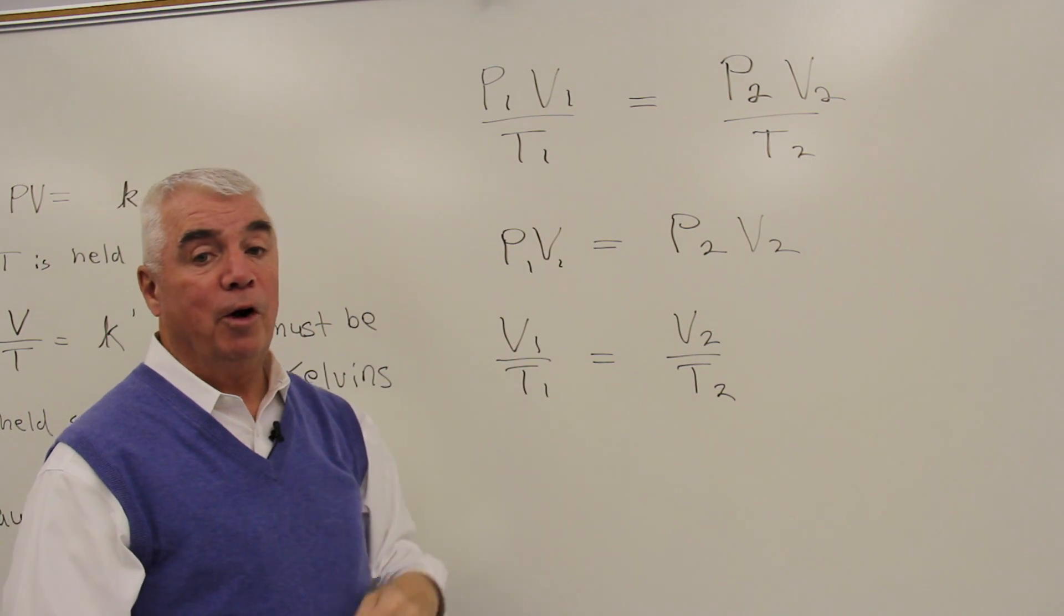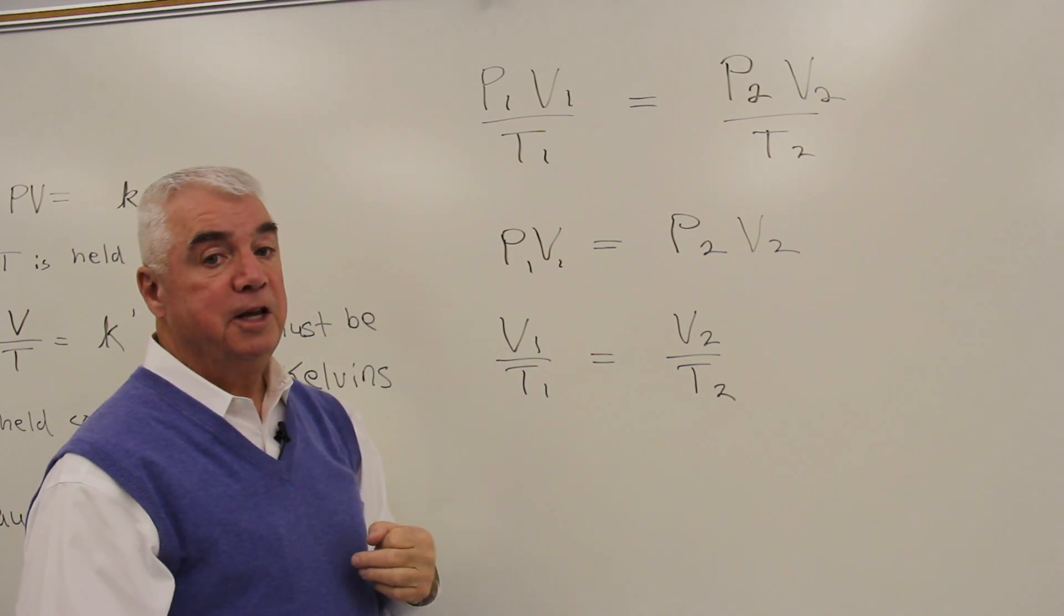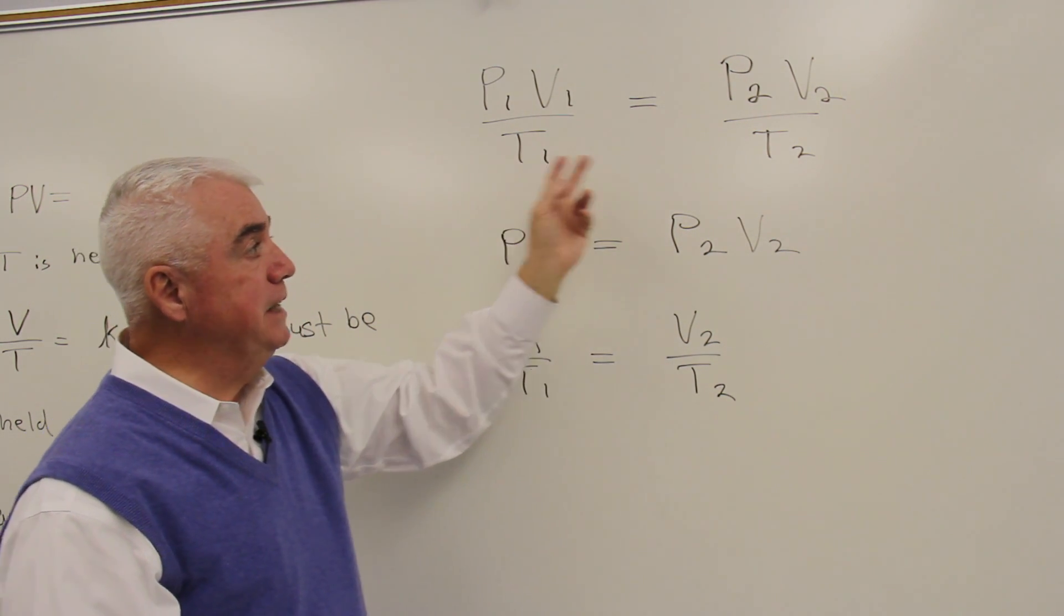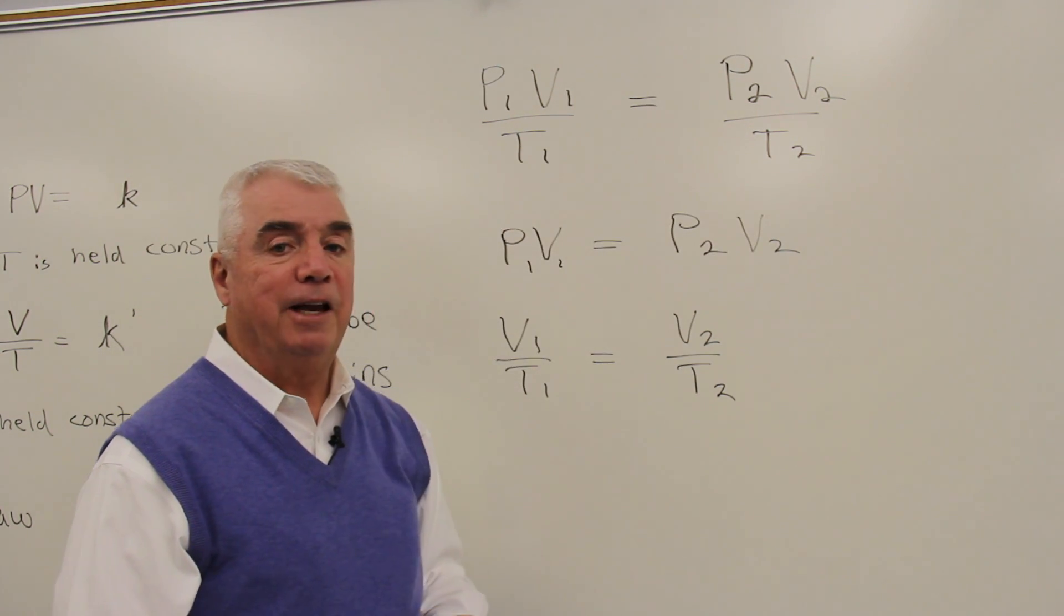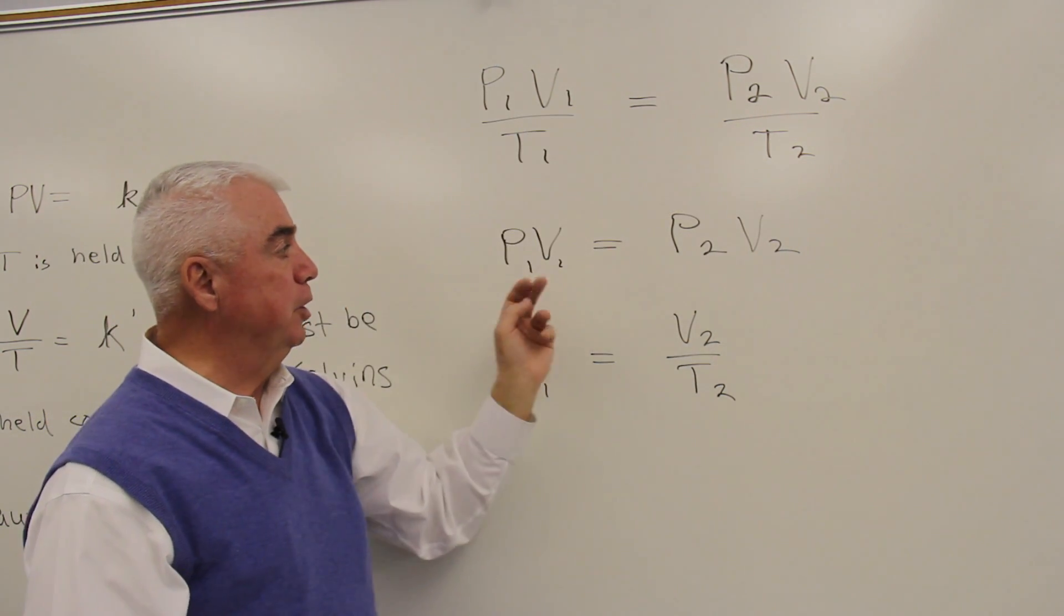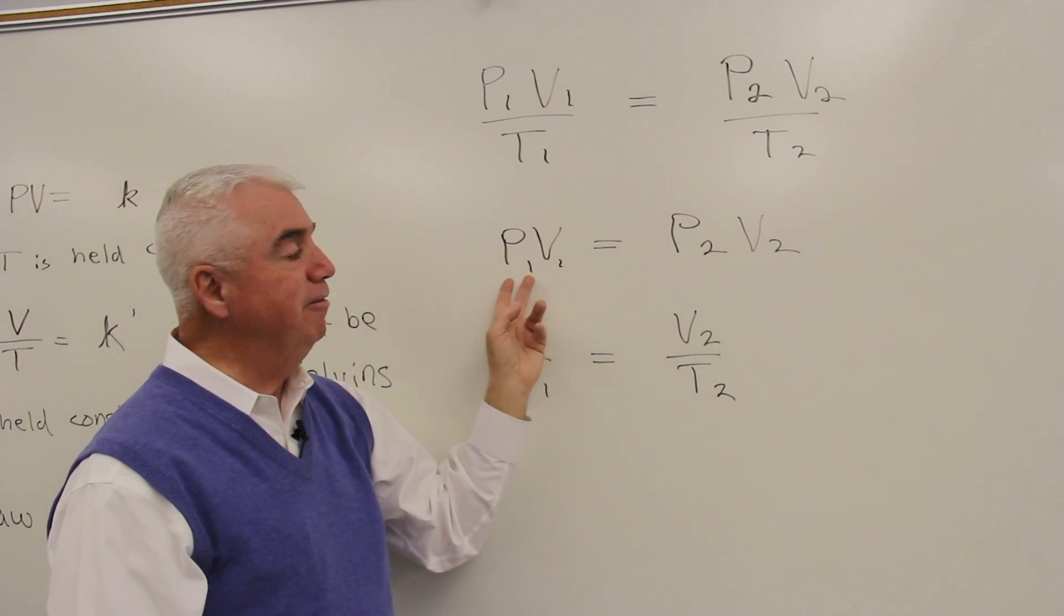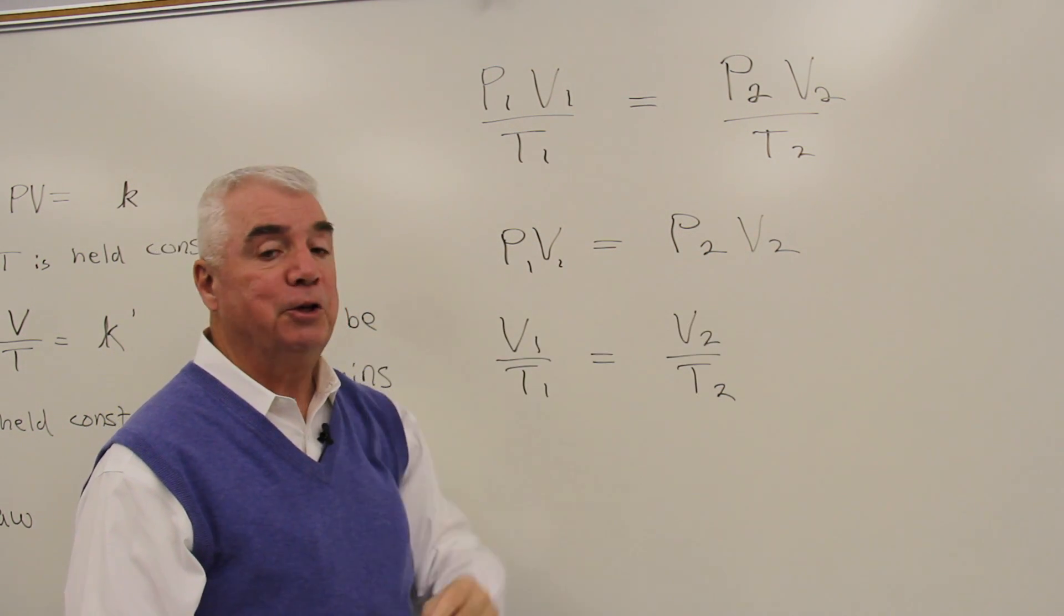So for example, Boyle worked at constant temperature, that means that T1 would equal T2, and we could simply eliminate it from this combined equation and come up with P1 V1 equals P2 V2.